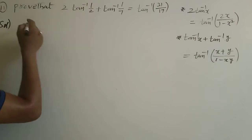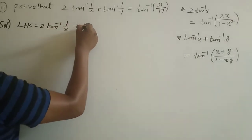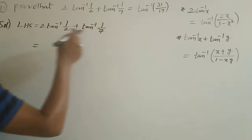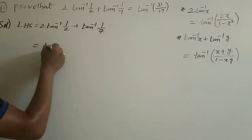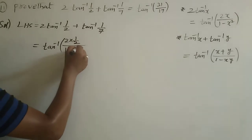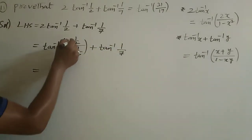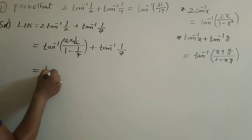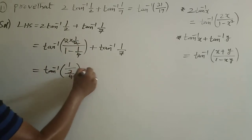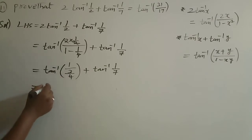So what is given? Our LHS is 2tan⁻¹(1/2) + tan⁻¹(1/7). Now applying the formula 2tan⁻¹x = tan⁻¹(2x/(1-x²)), where x = 1/2: tan⁻¹(2×(1/2) / (1 - (1/2)²)) + tan⁻¹(1/7). That gives tan⁻¹(1 / (1 - 1/4)) + tan⁻¹(1/7). Now 1/(3/4) — the reciprocal of 3/4 is 4/3 — so we get tan⁻¹(4/3) + tan⁻¹(1/7).